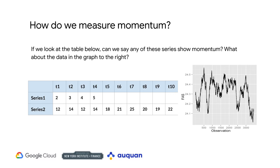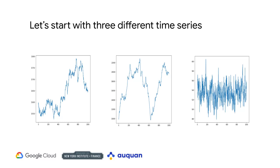Here are the previous two graphs and a new one. One of the graphs shows mean reversion, one momentum, and one Brownian motion. Can you determine visually which graph shows momentum, which shows a random walk, and which mean reversion? Mean reversion is pretty easy to identify, but it's a bit harder to distinguish between momentum and a random walk.